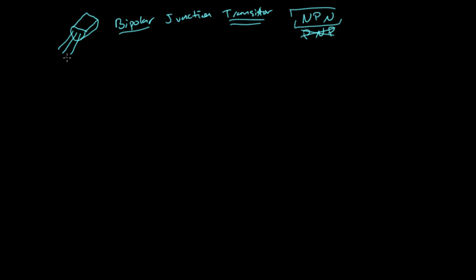This transistor has three leads to connect to the circuit, which is a little unusual if you're used to things like resistors, capacitors, inductors, or batteries — all of which have two leads. Three leads is a little different, but it'll start to make sense. The leads each have different names: there's an emitter, a base, and a collector. The transistor I'm using is a 2N3904, which is just one type of bipolar NPN transistor. There are lots of other similar types, each with particular attributes you can look up in the datasheet.